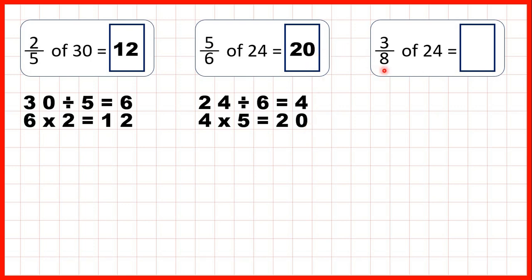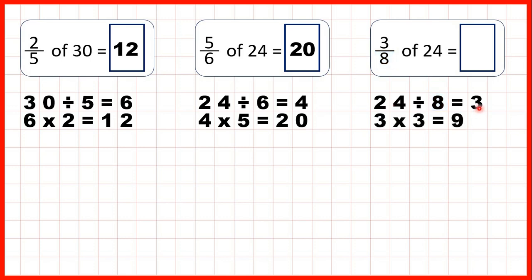And finally, we have 3 eighths of 24. So 24 divided by 8, divided by the denominator, is 3, because 3 times 8 is 24. But then we need to take that 3 and multiply it by the numerator, so times top. And 3 times 3 is 9, so that's our answer.